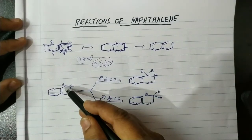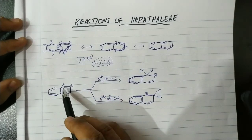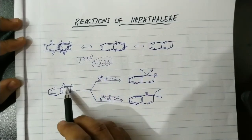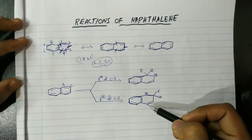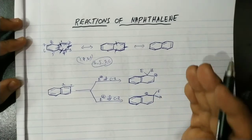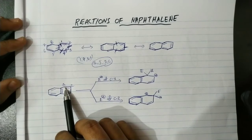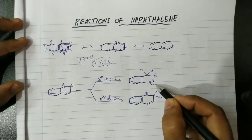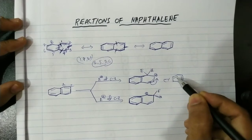Now let us discuss the aromatic reactions of naphthalene. There are two different carbon atoms — C1 and C2 — so for the attacking of electrophiles there are two possible sites: the first carbon and the second carbon. When the electrophile attacks at the first carbon it forms a sigma complex, and when it attacks at the second carbon it also forms a sigma complex. The first carbon is the most preferable position, explained on the basis of sigma complex stability stabilized by resonance.